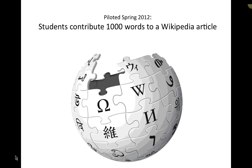Basically, in a nutshell, instead of having a final assignment in which students did an annotated bibliography — which we had done in previous semesters — we had students contribute to a Wikipedia article that they had identified as needing work. The requirement, at least in my section, was that they contribute 1,000 words, with their sources cited at the bottom in APA style.